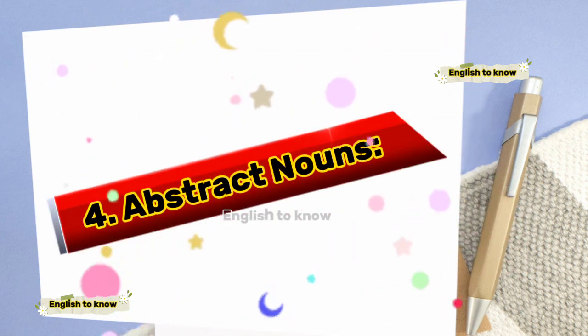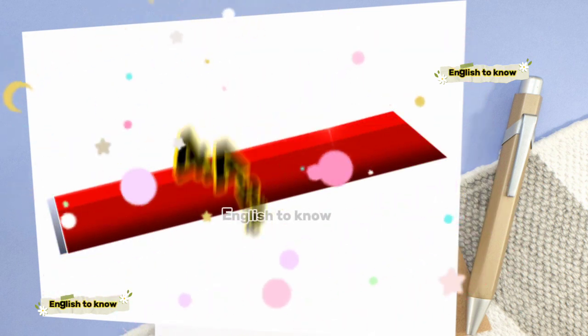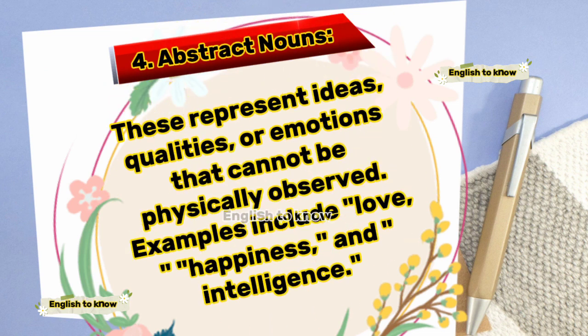Abstract nouns represent ideas, qualities or emotions that cannot be physically observed. Examples include love, happiness and intelligence.